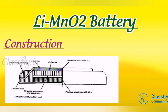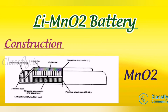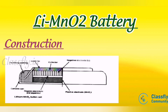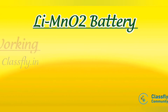In the construction of the lithium manganese dioxide battery: the anode is lithium metal, the cathode is manganese dioxide treated at 350°C, the electrolyte is lithium halide dissolved in an organic solvent, and the separator is made of polypropylene.